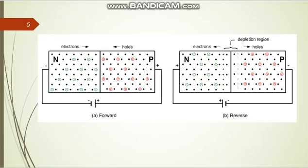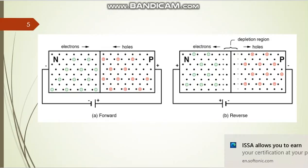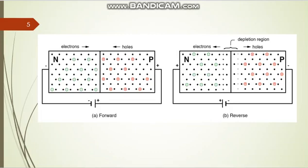The p-n junction diode can be connected in two ways — that is the biasing process. There are two biasing processes: forward and reverse bias. In our energy gap of semiconductor experiment, the p-n junction diode is connected in reverse bias. In reverse bias condition, the thermally excited electrons are more effective. In forward bias, the current is due to majority carriers — electrons in the n-region and holes in the p-region.